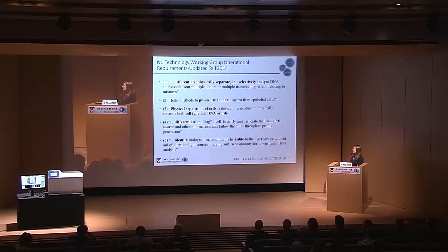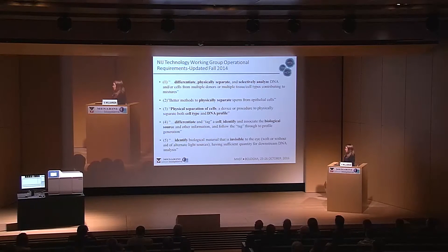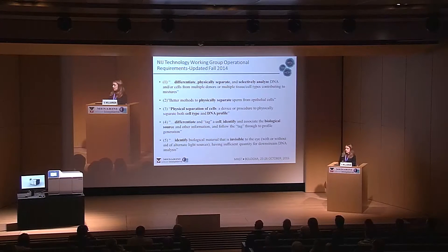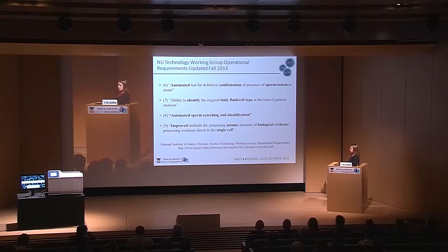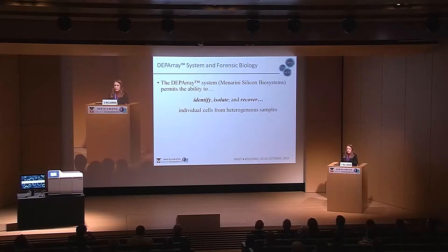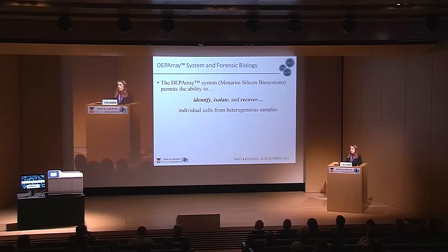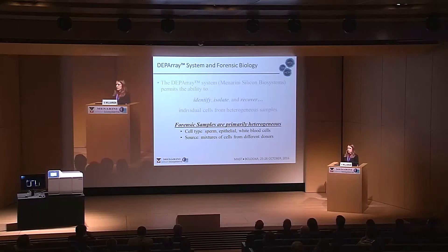These requirements include the physical separation of sperm from epithelial cells, differentiation of biological material from different sources, and identifying biological material down to the invisible cell. The DEPArray can also answer the need for an automated sperm searching and identification tool, and it can improve methods of processing biological material down to the single cell. The DEPArray can identify, isolate, and recover individual cells from heterogeneous samples, which is particularly useful within forensic samples.